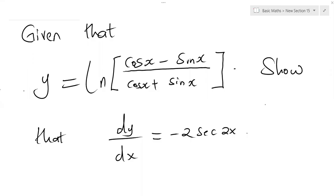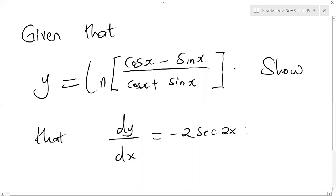Hello guys. I would like us to look at how to differentiate this particular function, given that y is equal to ln of cos x minus sine x over cos x plus sine x in the denominator. We need to show that the derivative is equal to minus 2 sec 2x.